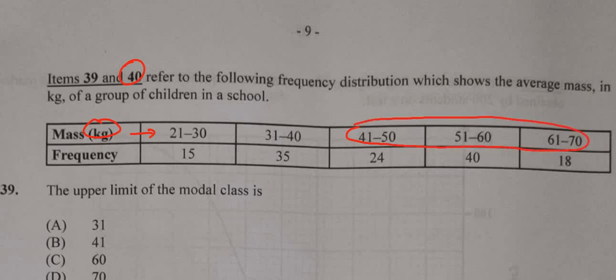So how many children? We have 24, 40, and 18, so we add those up.